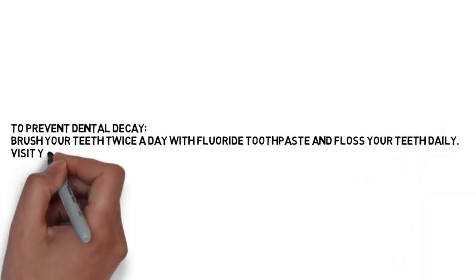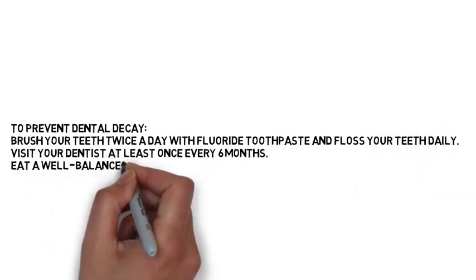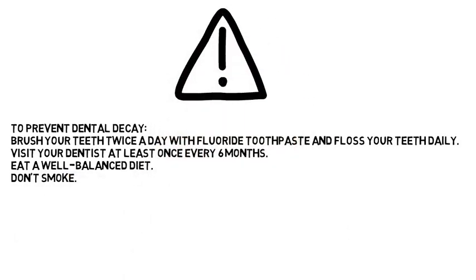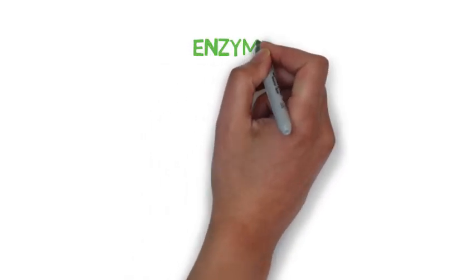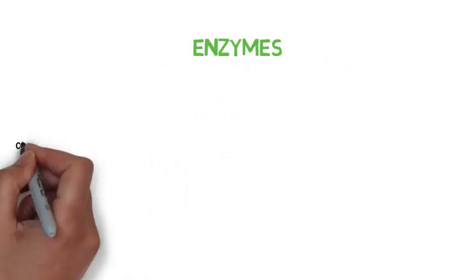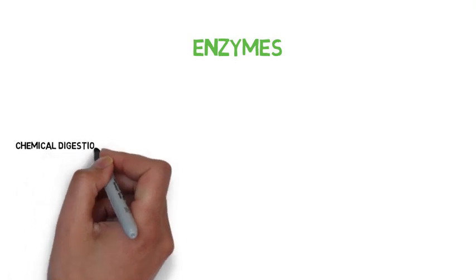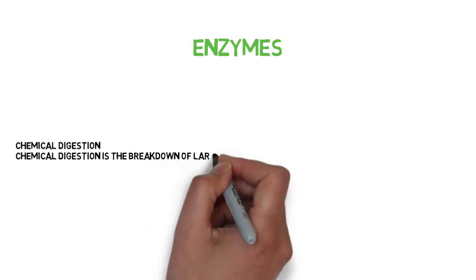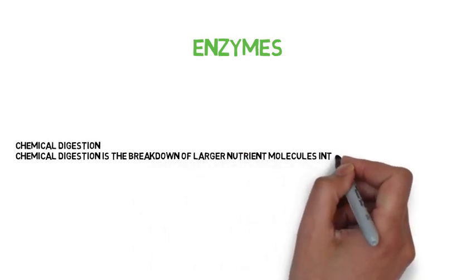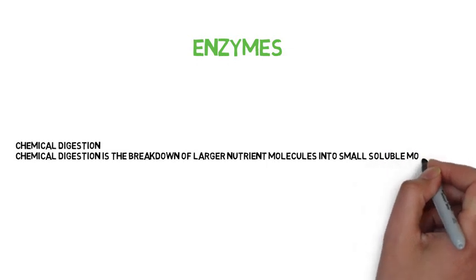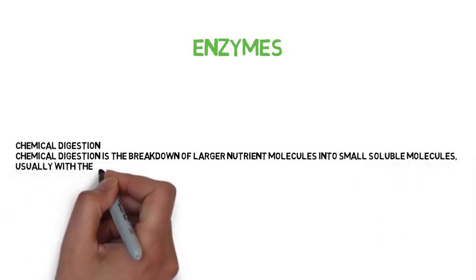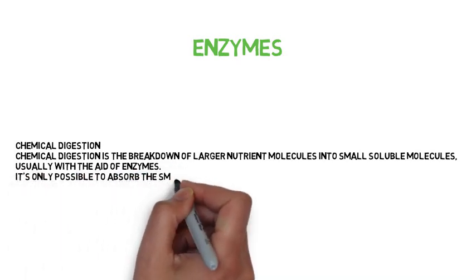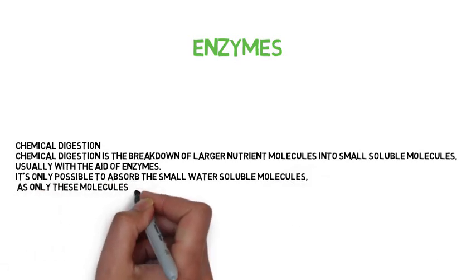Visit your dentist at least every six months, eat a well-balanced diet, and don't smoke. Enzymes and chemical digestion. Chemical digestion is the breakdown of larger nutrient molecules into small soluble molecules, usually with the aid of enzymes. It is only possible to absorb the small water-soluble molecules, as only these molecules are able to diffuse into the blood and lymph across the gut wall.